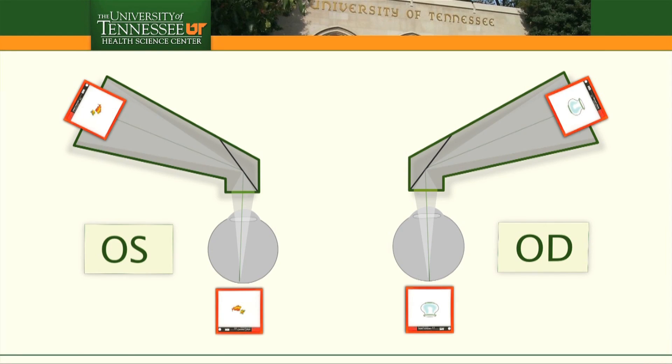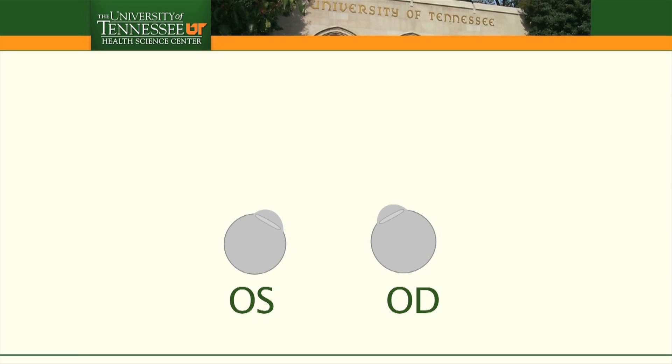Each haploscopic tube projects an image onto each retina. Under normal circumstances, the brain develops to correlate the visual input at each fovea as coming from straight in front.